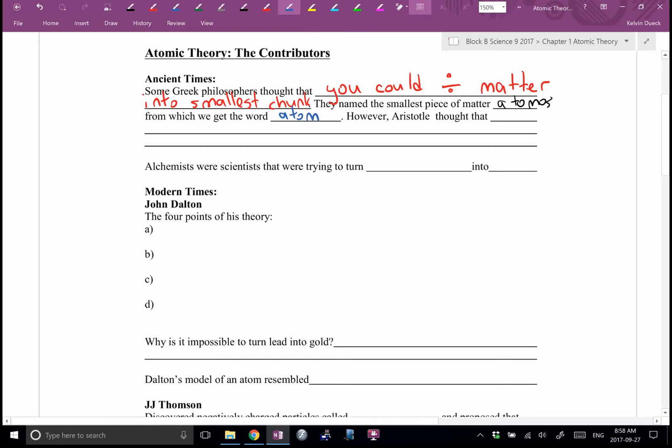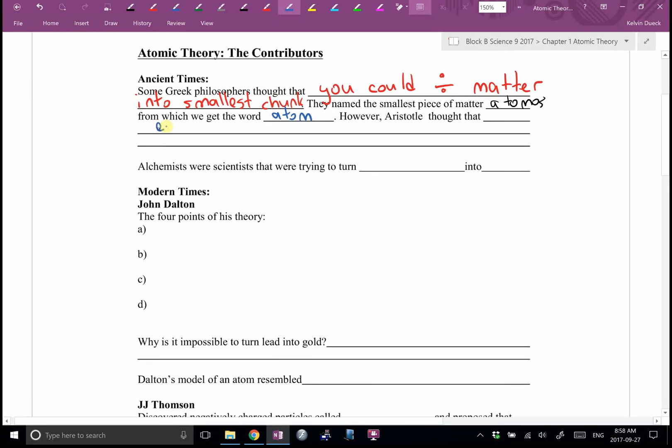What did they name the smallest piece of matter? Atomos. From which we get the word? Atomos. Yep. But Aristotle thought that, and he was a very influential scientist, philosopher at the time. What did he think that everything was made up of? Gabe. Earth, air, water, and fire. Okay.